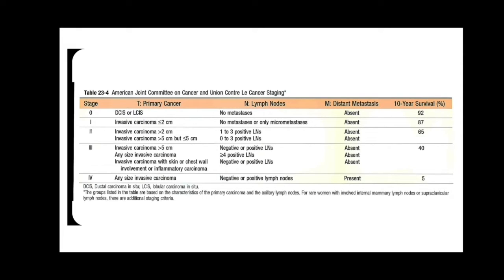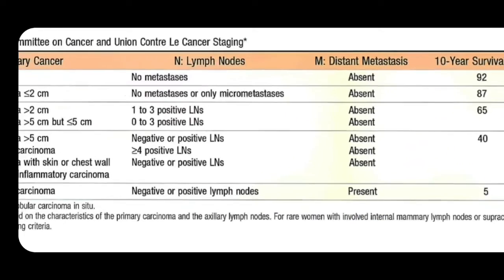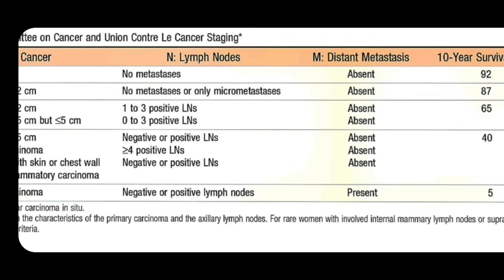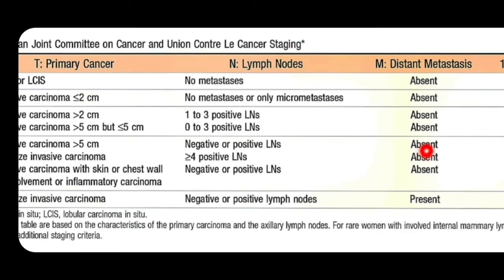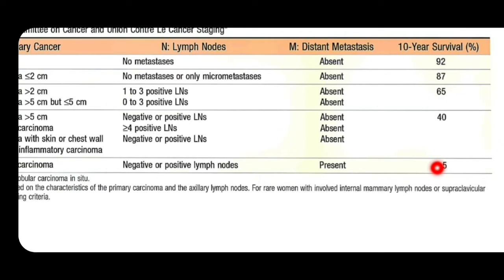Let us start with stage 4, the most dangerous stage. In stage 4 there is distant metastasis — the size of cancer does not matter, and lymph nodes may be negative or positive. The only criterion that matters is distant metastasis. Below stage 4, distant metastasis is absent. The 10-year survival rate in stage 4 breast cancer is only 5 percent, giving it a bad prognosis.